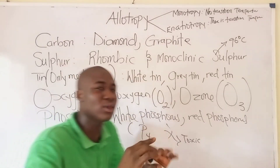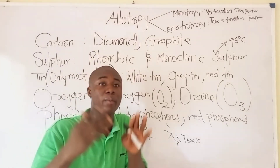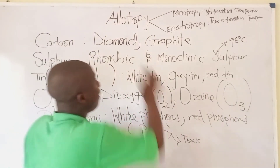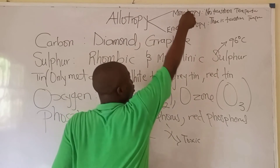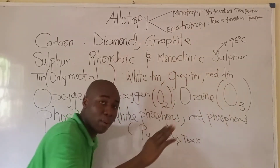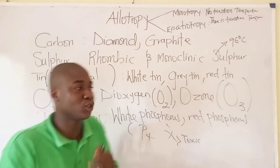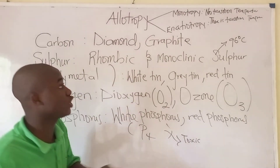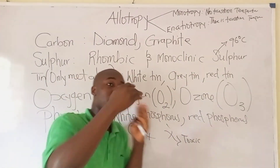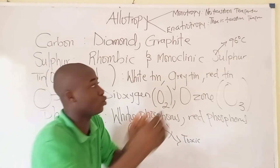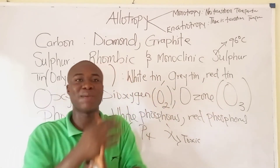Carbon does not have any transition temperature, so carbon falls under monotropy. Sulfur, on the other hand, has a transition temperature — monoclinic sulfur can change to rhombic sulfur at a temperature of 96 degrees Celsius, and that temperature is called the transition temperature.